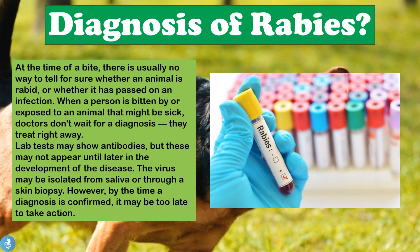Lab tests might show antibodies developed against the rabies virus, but these usually occur very late in the disease, after the more crucial treatment window has passed. The virus may also be isolated from salivary samples or through skin biopsies, but by this time it is usually too late to begin treatment, as the disease has progressed severely and the patient has a very slim chance of surviving. Therefore, treatment is a race against time — the sooner it is started, the better the chances of saving the patient's life.